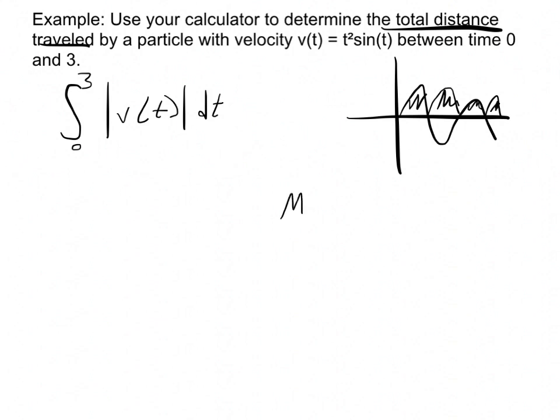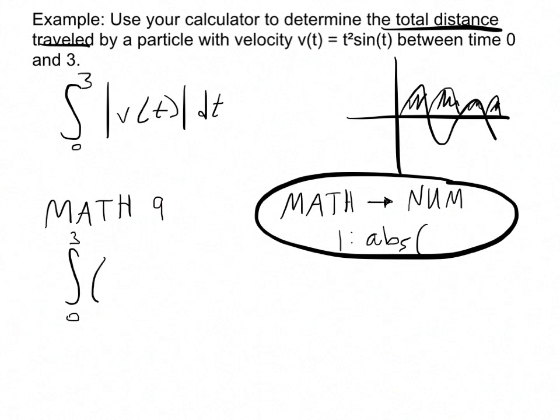If you hit the math button, then the sideways arrow to get to the numbers menu, the first option is ABS. If you hit math 9, it'll bring up your integral symbol. Type in 0 and 3. Then if you do the absolute value button, it'll put an absolute value bar in your problem.